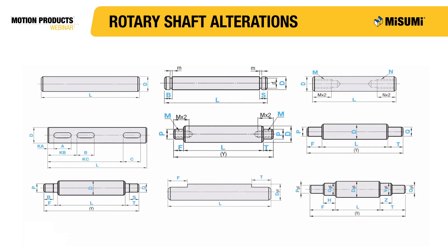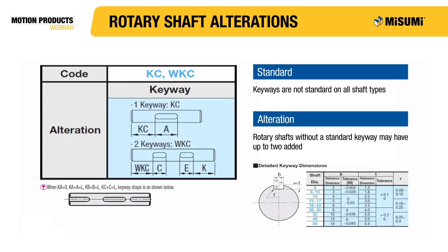Misumi categorizes rotary shaft selections by different end shapes and features, but sometimes multiple features are required, so we offer additional machining alterations. The first and most common alteration adds one or two keyways to shafts where they are not already a standard feature. Keyways work with a key to prevent relative rotation between components and enable torque transmission. The keyway location and length can be configured in one millimeter increments anywhere along the shaft, but cannot run its entire length.